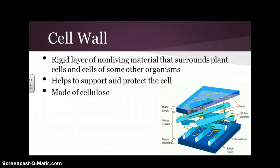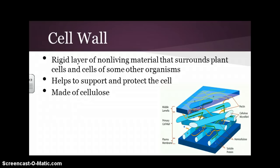A cell wall is a rigid layer of non-living material that surrounds a plant cell and cells of some other organisms, but it's typically found in plant cells. It helps to support and protect the cell and it's made of cellulose. There's a little diagram of what it looks like. Remember, cell walls are in plant cells, not most animal cells.